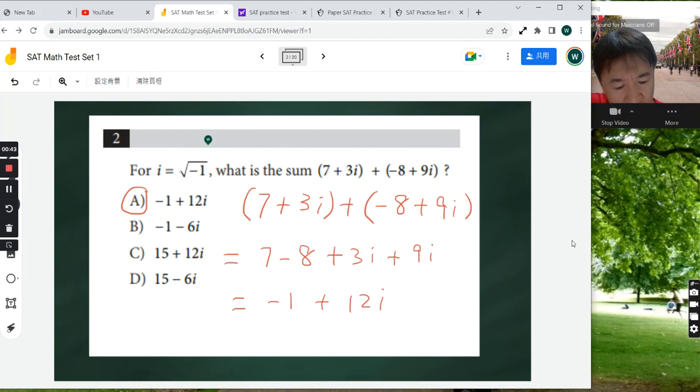And what is the sum of 7 plus 3i plus negative 8 plus 9i? So first of all, we want to combine like terms. Collect like terms—constant, we can combine constant with another constant.